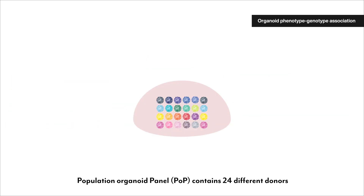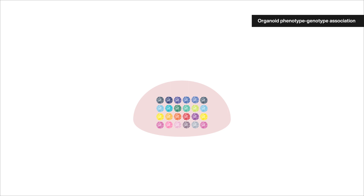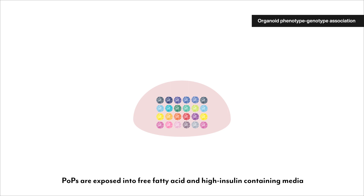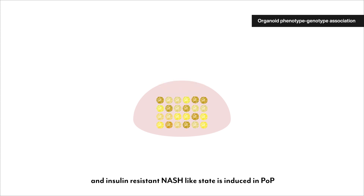The population organoid panel contains 24 different donor-derived HLOs and allows for on-mass phenotyping. POPs are exposed to free fatty acid and high insulin-containing media, and an insulin-resistant NASH-like state is induced in the POP.